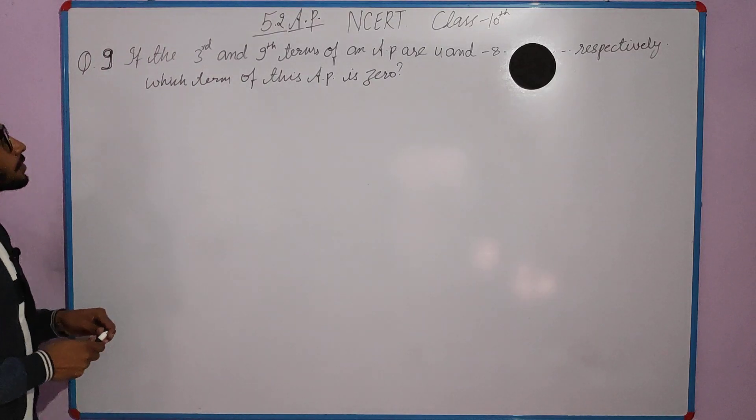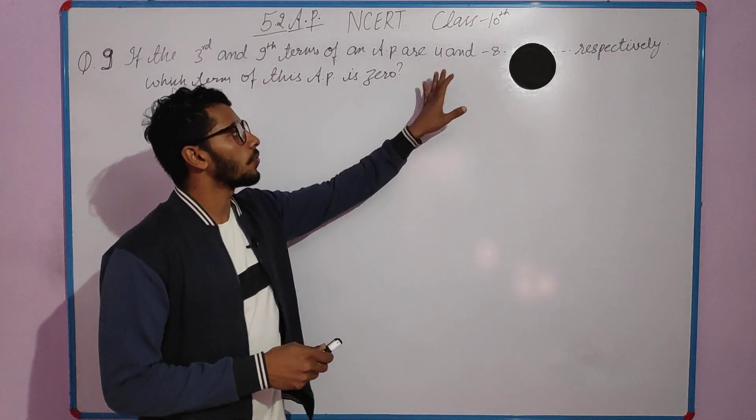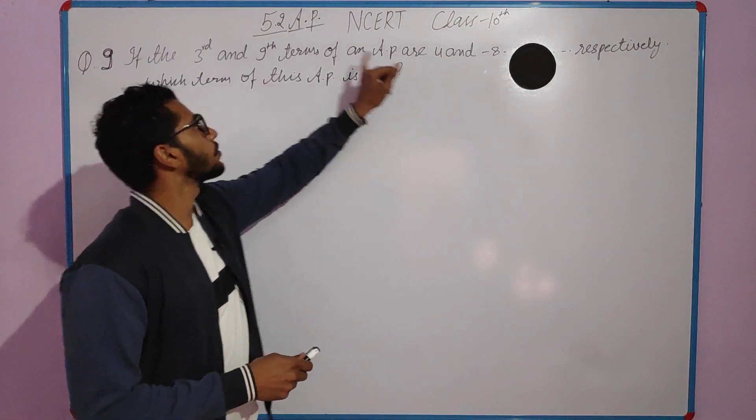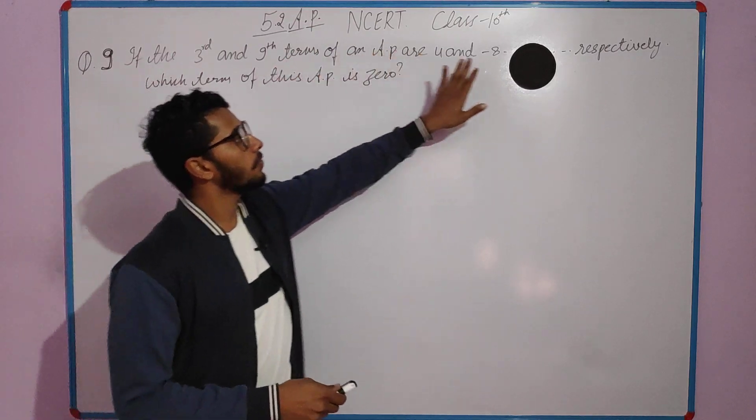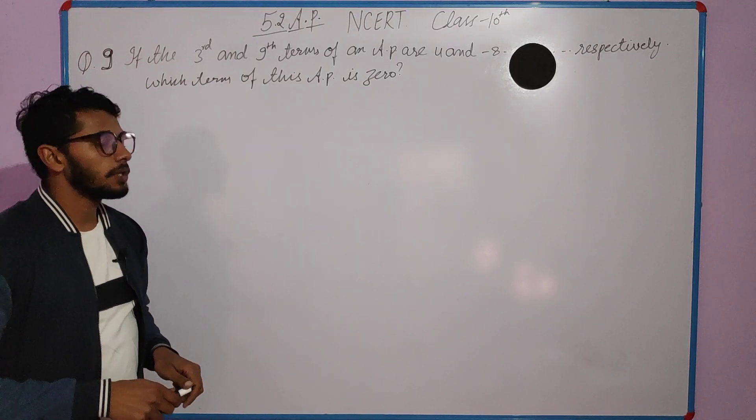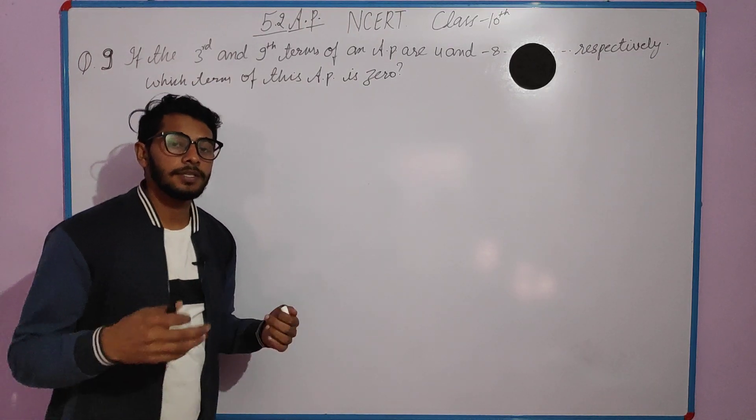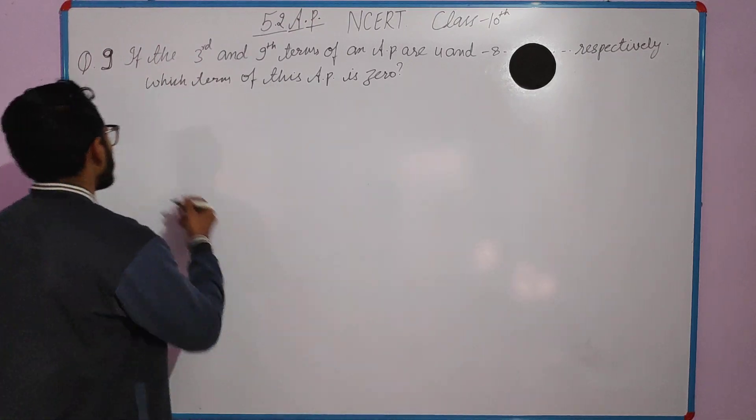So the question is: if the 3rd and 9th term of an AP are 4 and minus 8 respectively, which term of this AP is 0? So we need to find which term of this AP is 0.